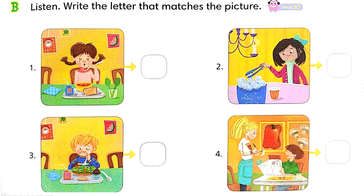Section B — listen and write the letter that matches the picture. A: He is eating a salad for lunch. B: He wants pizza for dinner. C: She is eating soup for dinner. D: Do you want ice in your juice?